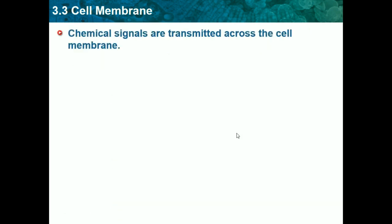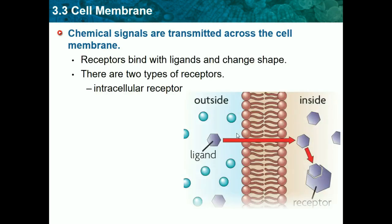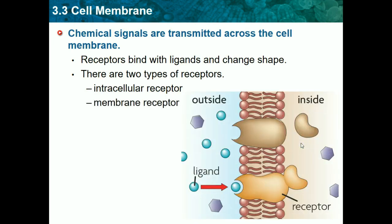Chemical signals are transmitted across the cell membrane. Receptors bind with ligands and change shape. There are two types of receptors: intercellular and outside. A ligand is a chemical message that crosses through and binds to a receptor on the inside. Just know that the cell membrane is selectively permeable — there are also membrane receptors located within the membrane.